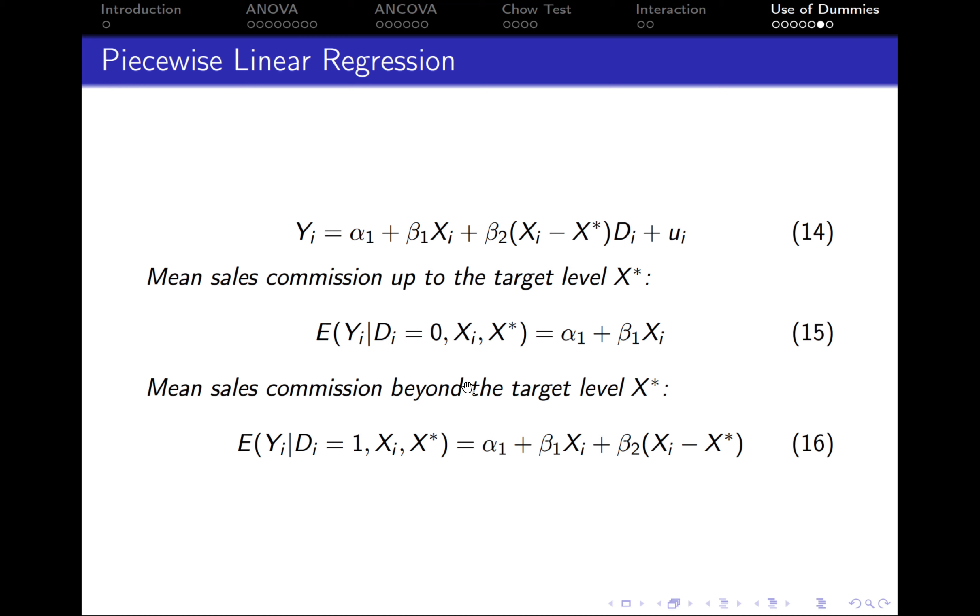The commission beyond the target level is the case when the dummy variable equals 1. What we have is alpha 1 plus beta 1 Xi plus beta 2, the whole function.